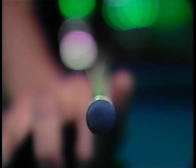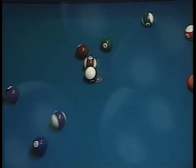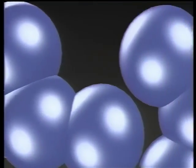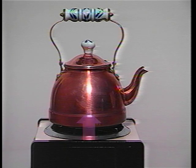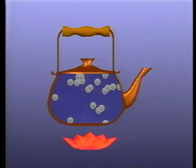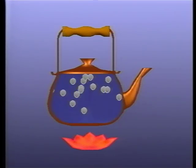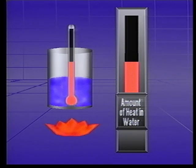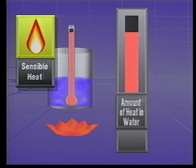On a pool table, energy is transferred from the cue ball to the less active object balls when they collide. When water is heated, the heat energy moves similarly from molecule to molecule. Heat always flows from a higher temperature level to a lower temperature level. In a teapot, heat from the flame is conducted to the water where it excites the molecules. As the molecules vibrate faster and faster, the temperature rises. Between freezing and boiling, the heat of the liquid is directly related to its temperature — therefore, this is referred to as sensible heat.